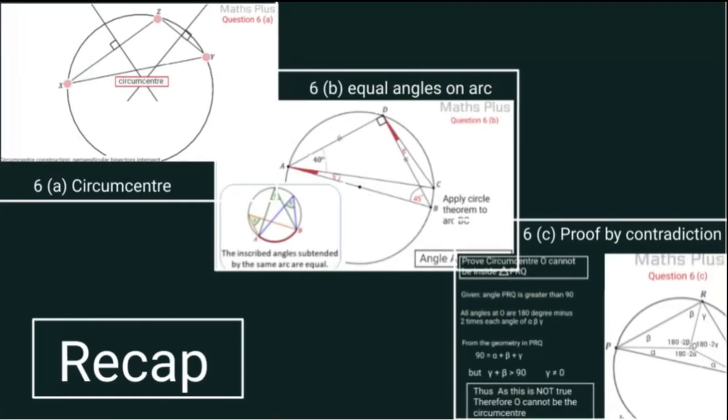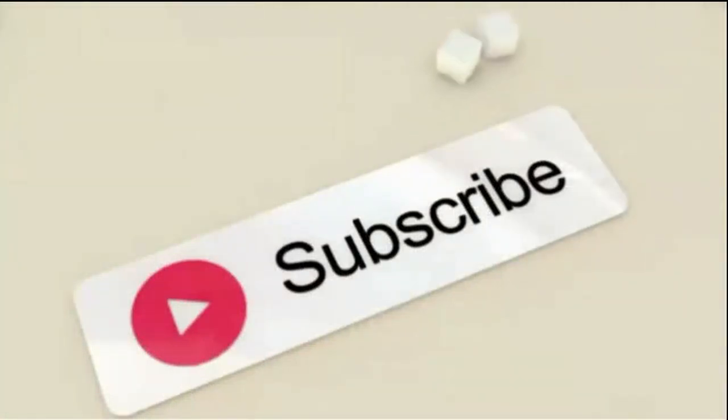Let's do a quick recap. 6(a), we did the circumcenter construction. 6(b), we looked at the theorems. We had the same angle on the arc on either side, we correspond to those. In part (c), we had to set up the geometry, so we did the proof by contradiction. α + β is greater than 90, therefore α + β + γ cannot be equal to 90 degrees. Pretty tricky question. Don't forget to subscribe to the channel. Thanks very much for viewing, and please give a thumbs up and look out for my next exciting video.